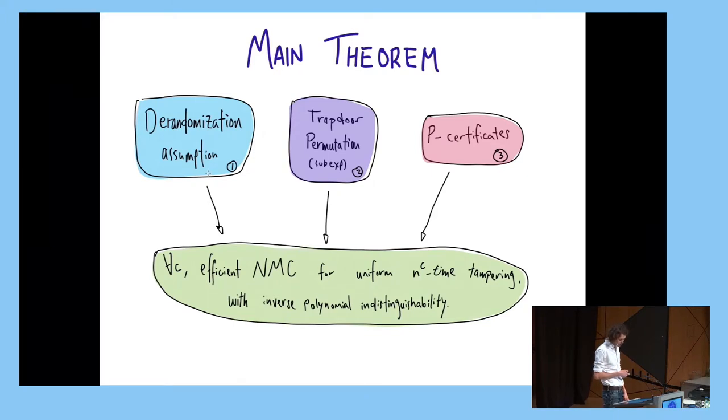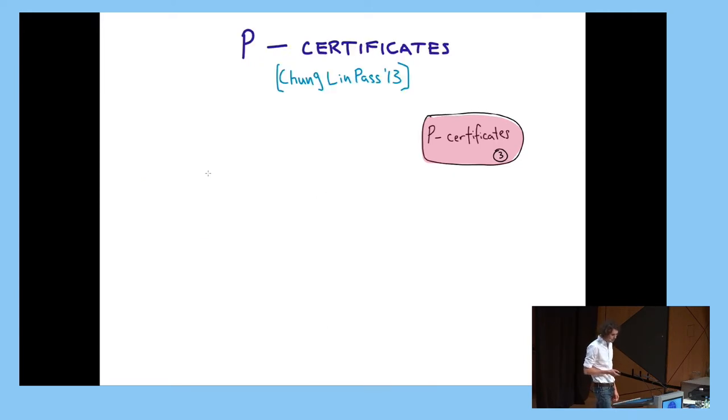So, what does this little thing at the bottom mean? It means that for any non-uniform poly-sized distinguisher, the gap here is inverse polynomial, not negligible, unfortunately. It would be great if we could do better, but this is what we have. We already think it's very exciting.